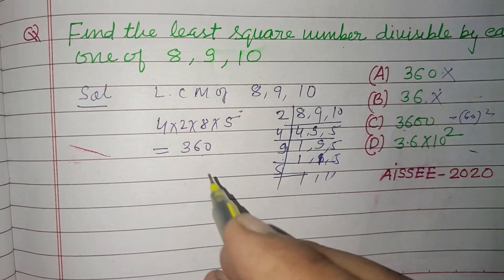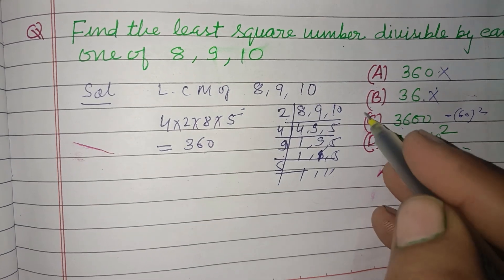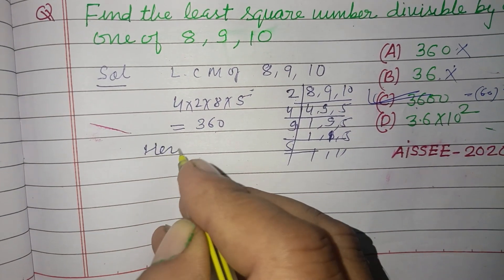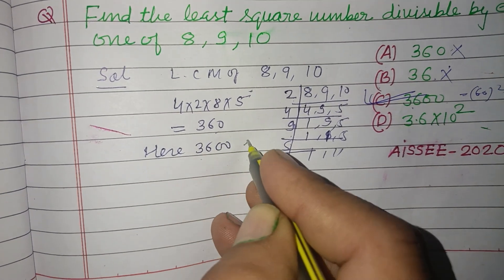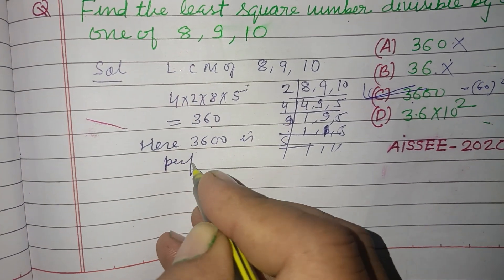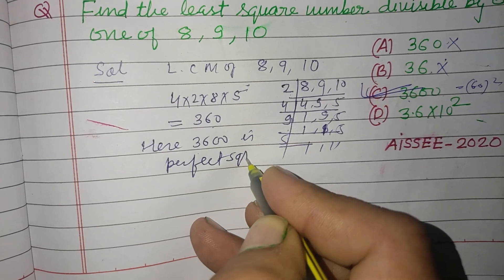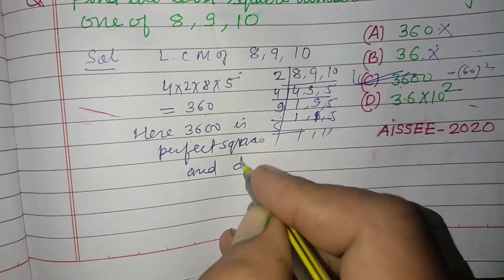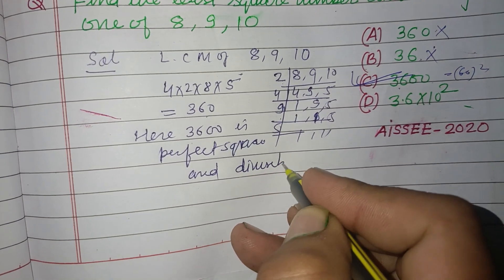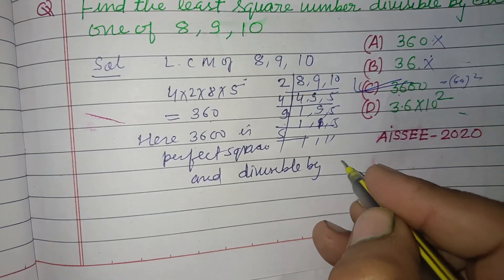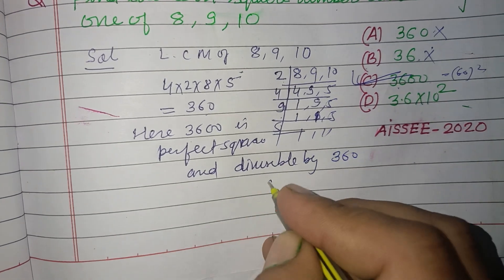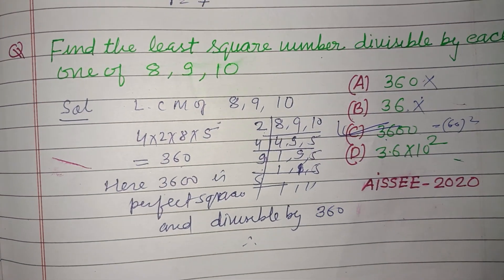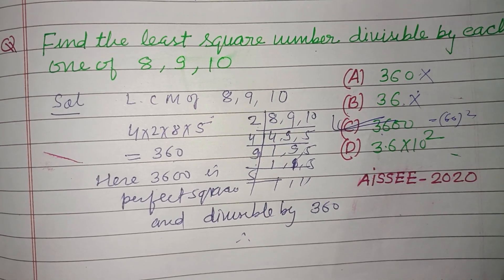Okay, and which is also divisible by 360. Therefore this is the correct answer. Here 3600 is a perfect square and divisible by 360. Therefore this is the correct answer. I hope you got it. Please like the video, subscribe to the channel.